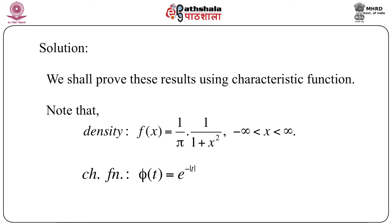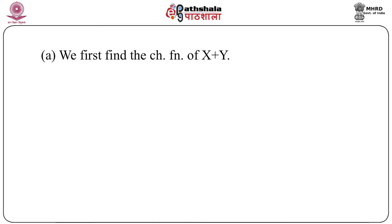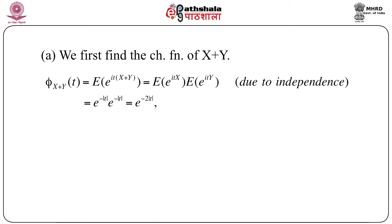It is interesting to note that the characteristic function of the Cauchy distribution e^{-|t|} has the exact form of the density of the double exponential (Laplace) distribution, and the characteristic function of the Laplace distribution 1/(1+t^2) has the exact form of the Cauchy density — so there is a correspondence between the density and characteristic function of these two distributions. For X+Y: φ_{X+Y}(t) = E[e^{it(X+Y)}] = E[e^{itX}]·E[e^{itY}] (by independence) = e^{-|t|}·e^{-|t|} = e^{-2|t|}.